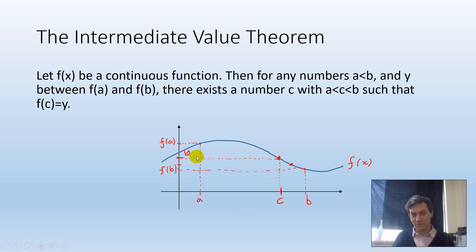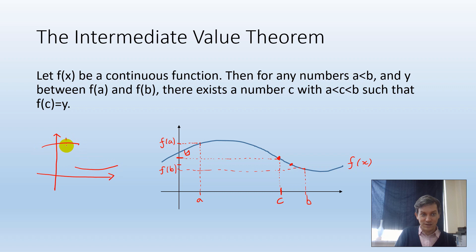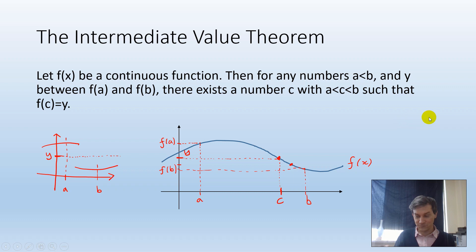This obviously only works for continuous functions. If I have a discontinuous function, I could choose a function which looks something like this, and if I choose a here and b here, I could choose y in the middle and there is no point of the function which has that value. So the theorem is false if f(x) is not continuous — it only works for continuous functions. This brings us to John Horton Conway's contribution, which was about the converse of this theorem.